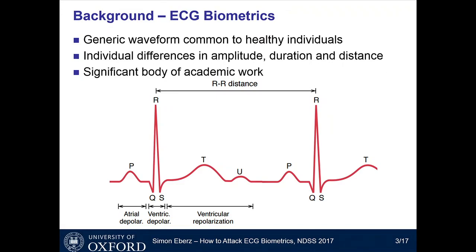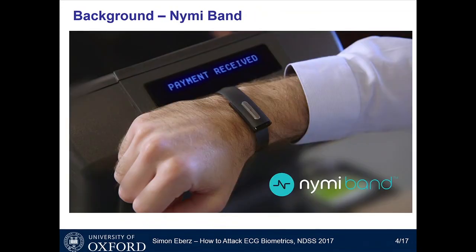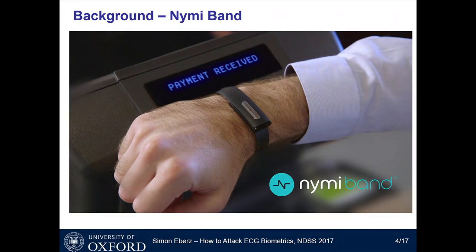This extensive body of work has finally resulted in one of the few commercial products — the NYMI band, shown in this photo. This is the first, and as far as I'm aware, the only product using ECG for authentication. The NYMI band is a wristband with two electrodes: one on the bottom constantly in contact with the user's wrist, and an electrode on a buckle. When the buckle is touched by the user, it allows the band to measure that person's ECG. It doesn't look like a medical monitor, but essentially does the exact same thing.